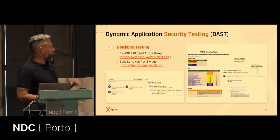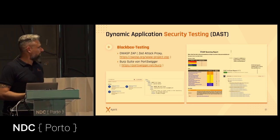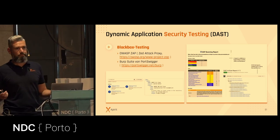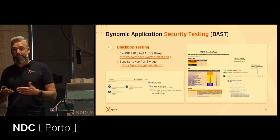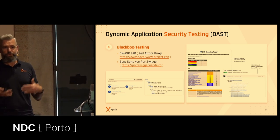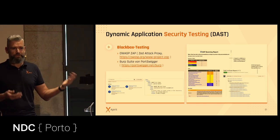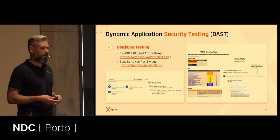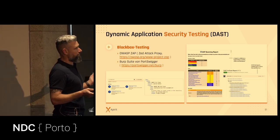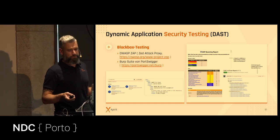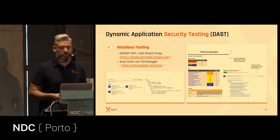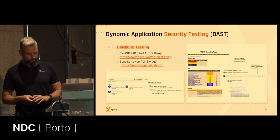The report from DAST is easy to integrate in your pipeline because black-box testing does not have a lot of variables — you just execute it, give it the target URL and it runs. Of course, this is just for web applications. If you want to do this with other kinds of applications, it gets much more complicated.